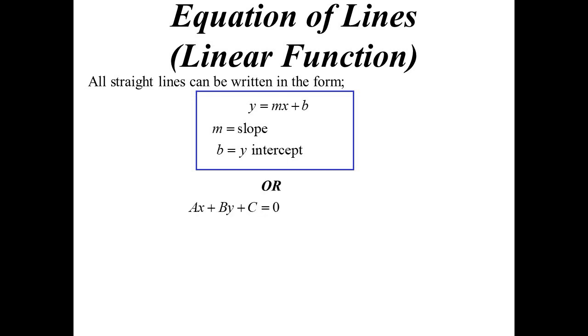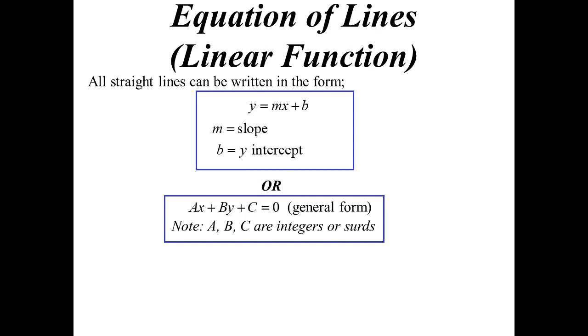Or sometimes we write it in general form. So that's where we move everything to the one side and make it equal to zero. Now a, b and c, we like to make an integer or a surd of course. I mean if we're dealing with thirds we can't make them integers, but we basically don't want fractions.